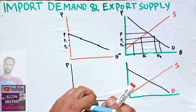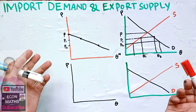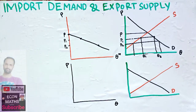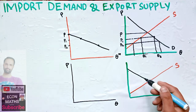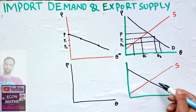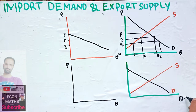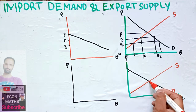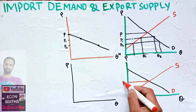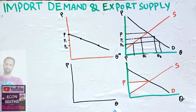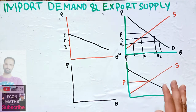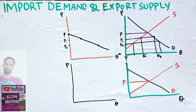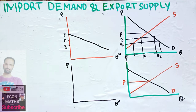The import demand schedule is simply given by domestic demand minus domestic supply. Now, moving to the foreign country: in the foreign country we also have domestic demand and domestic supply plotted with quantity on one axis and price on the other. The autarky price in the foreign country is the price at which their domestic demand equals their domestic supply.